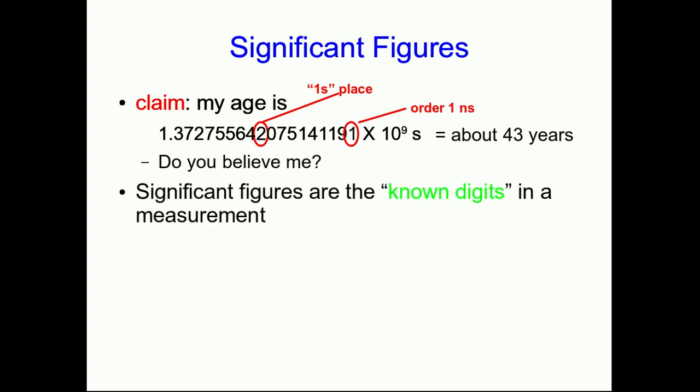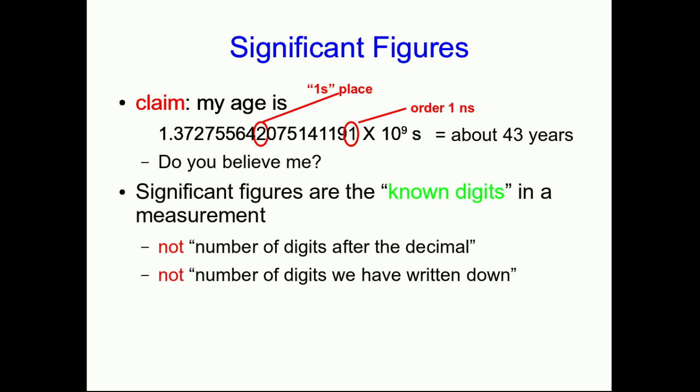I've given you too many significant figures. I've told you digits that I have no way of knowing. This is what significant figures are. They're the digits in a number which you actually have reason to know. It's not the number of digits after the decimal, and it's certainly not the number of digits you've written down.